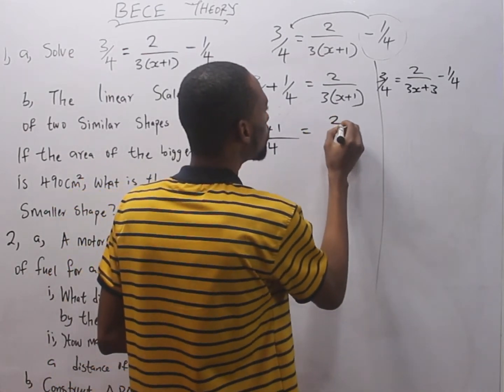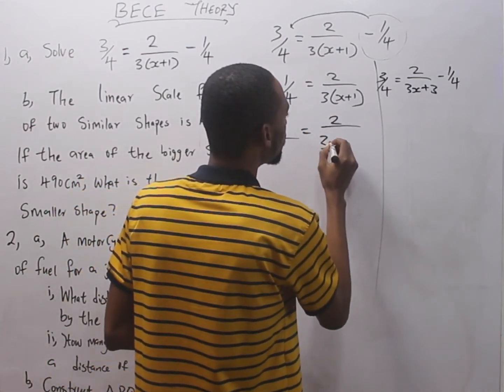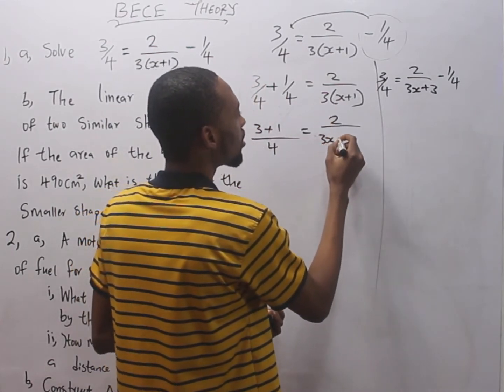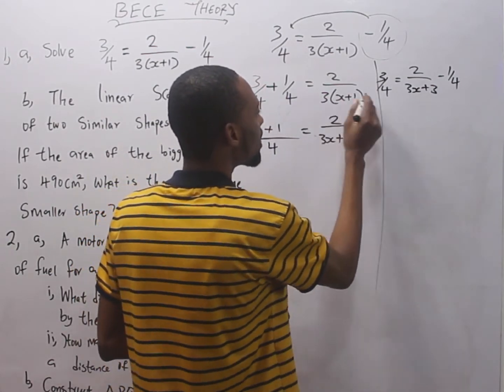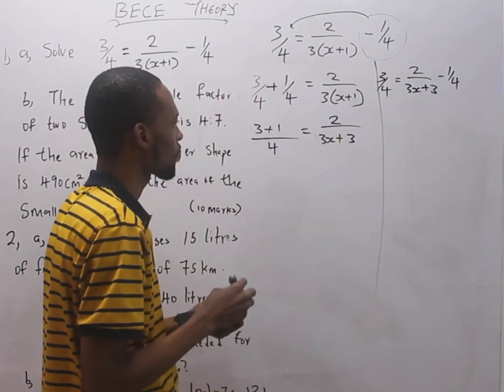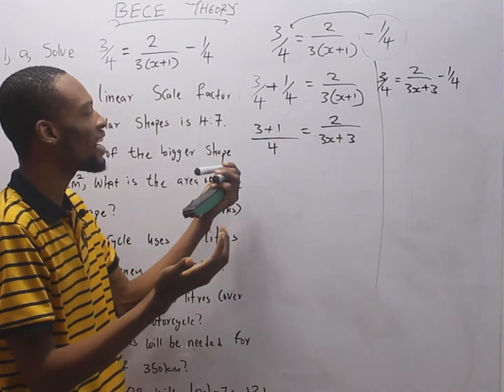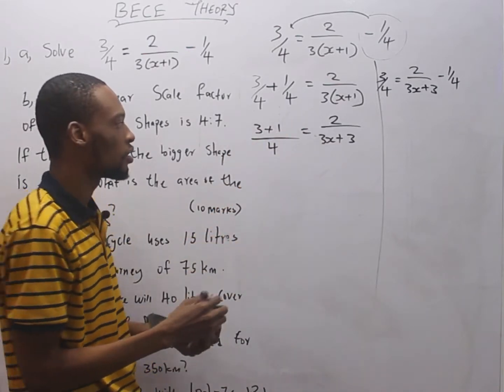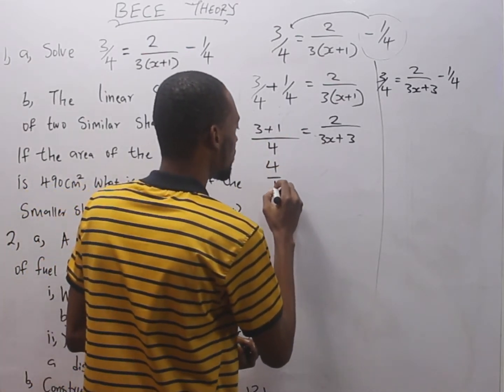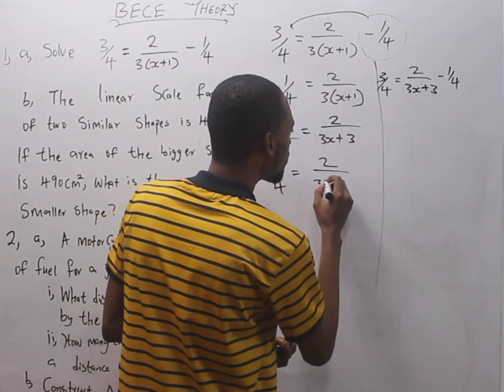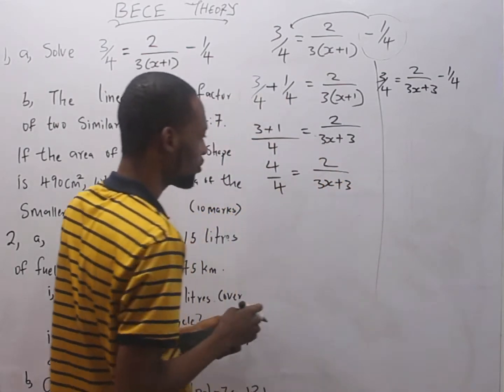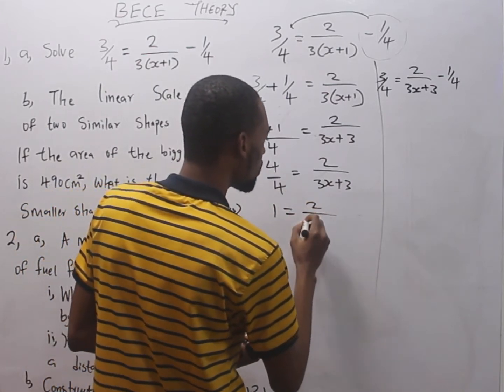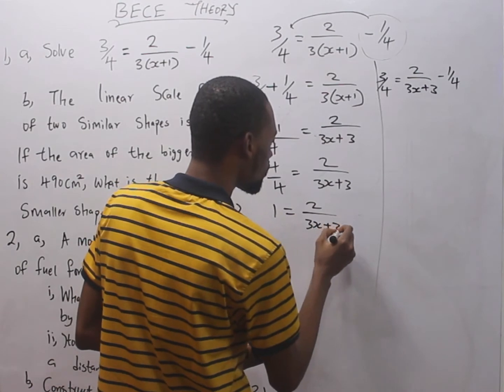So we have simplified this. 3 plus 1 is 4. So here we have 4 over 4 equals 3s plus 3. 4 over 4 is 1. So 1 is equal to 3s plus 3.